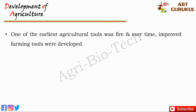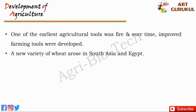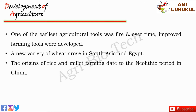Over time, improved farming tools of bone, stone, bronze, and iron were developed. Early farmers also developed improved varieties of plants. A new variety of wheat arose in South Asia and Egypt. The origins of rice and millet farming date to the Neolithic period in China.